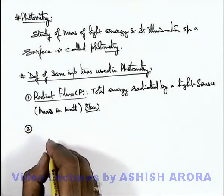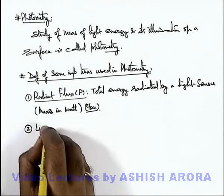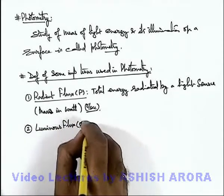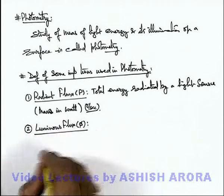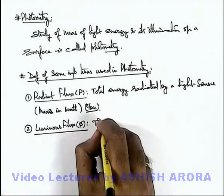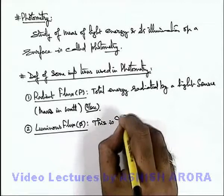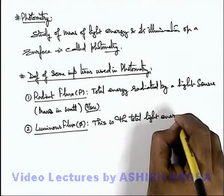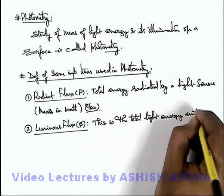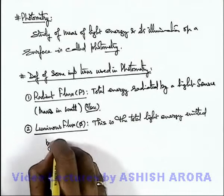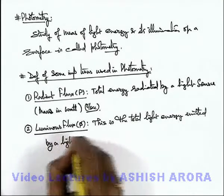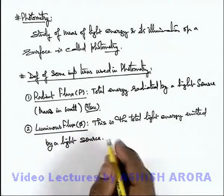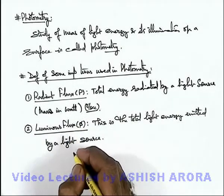A similar other term which is used is luminous flux, which is denoted as φ. About luminous flux we can write: this is the total light energy emitted by a light source. And certainly this φ is always less than P.